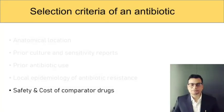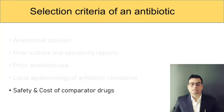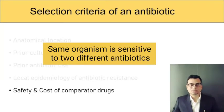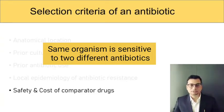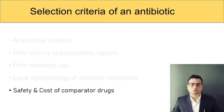The fifth and last criteria is the safety and cost of comparator drugs. Sometimes you get an antibiotic sensitivity report in a patient's previous health records showing that a particular organism is equally sensitive to two different antibiotics. In that case, the safety and the cost of the drug become important criteria to pick the one which is the least toxic and least expensive.